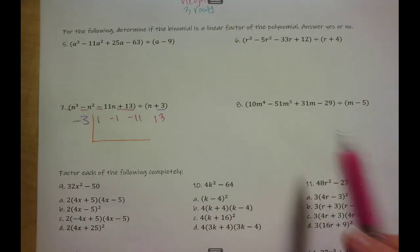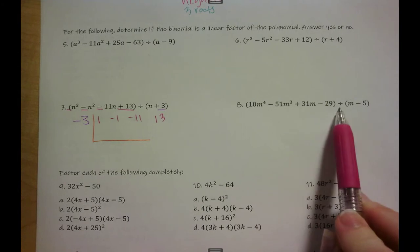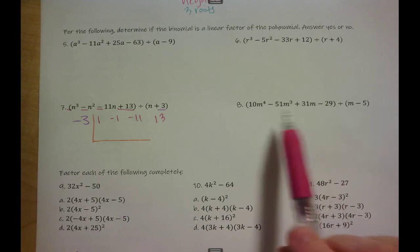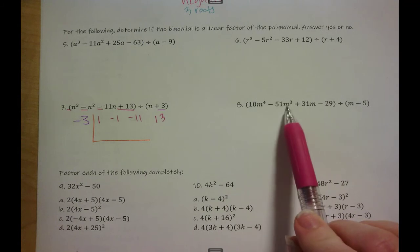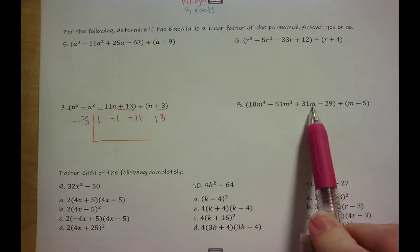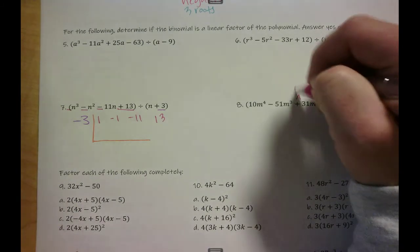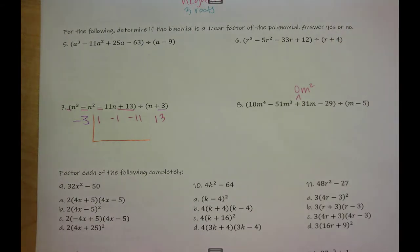Another thing to remember is that all of my exponent numbers need to be there. So we've got on number eight we've got four, three, one. So we need to add in zero m squared. Make sure you put that zero in your division.